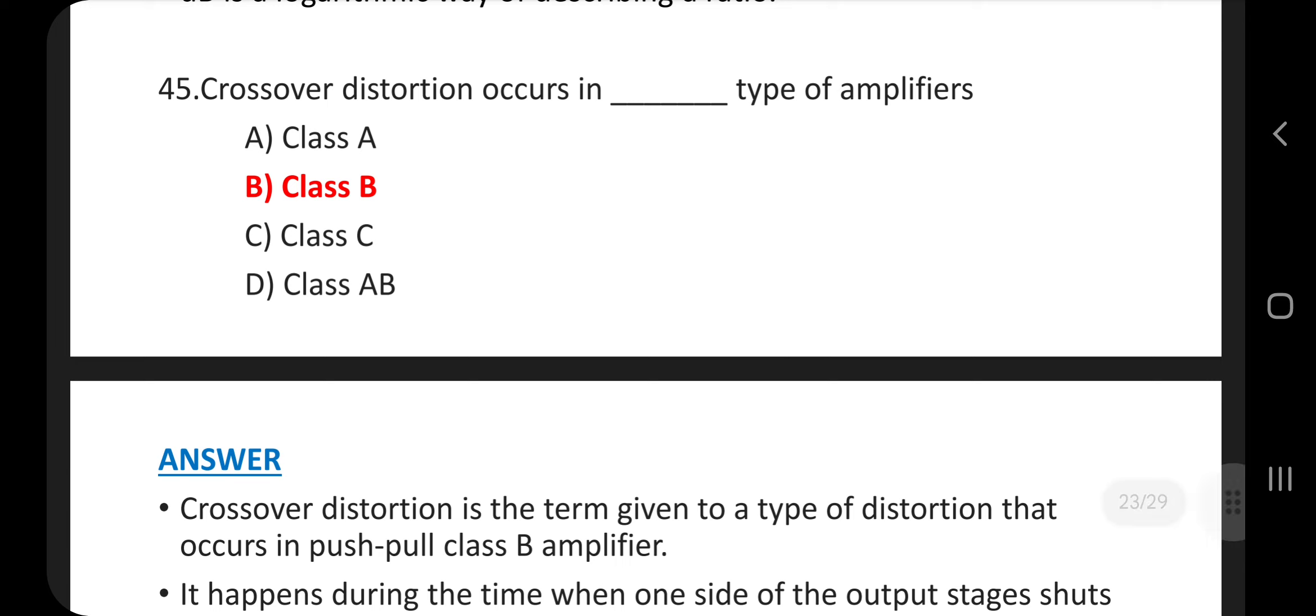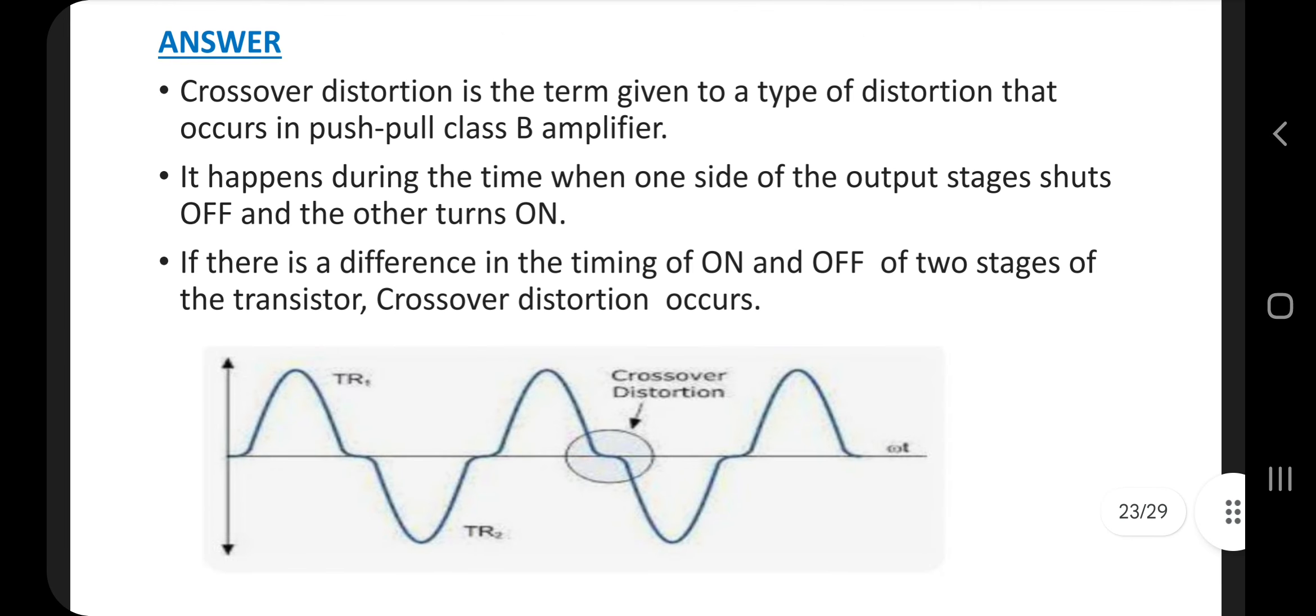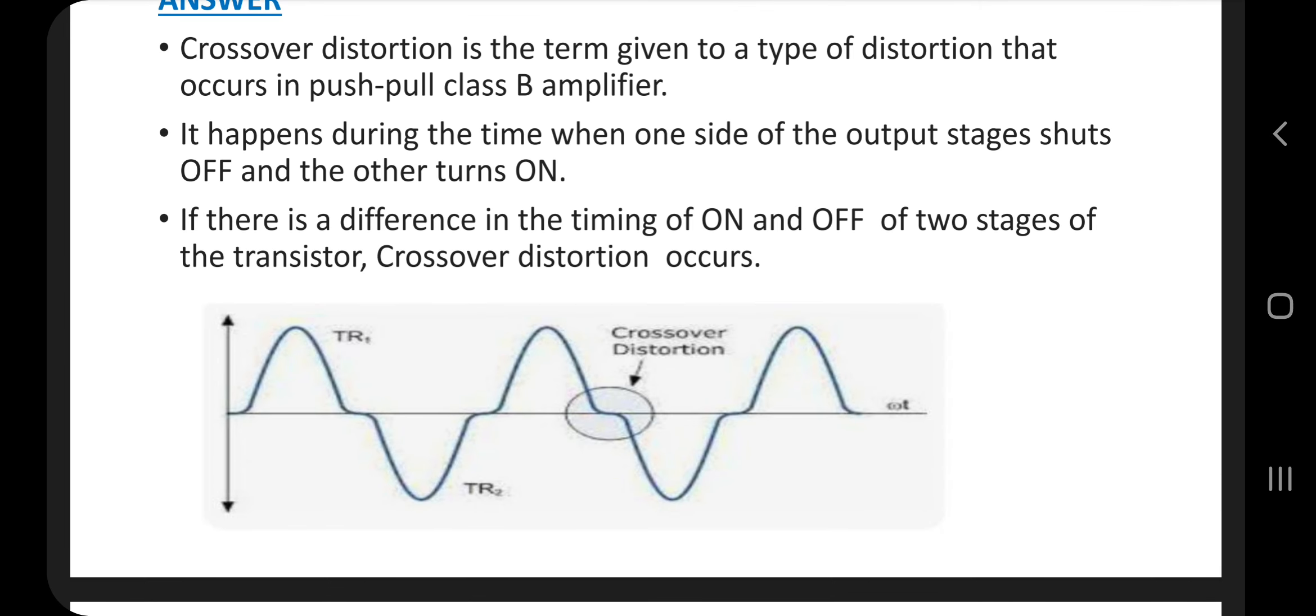Question number 45. Crossover distortion occurs in dash type of amplifiers. Answer is option B, class B. Crossover distortion is the term given to a type of distortion that occurs in push-pull class B amplifiers. It happens during the time when one side of the output stage shuts off and the other turns on. If there is a difference in the timing of on and off of two stages of the transistor, crossover distortion occurs.